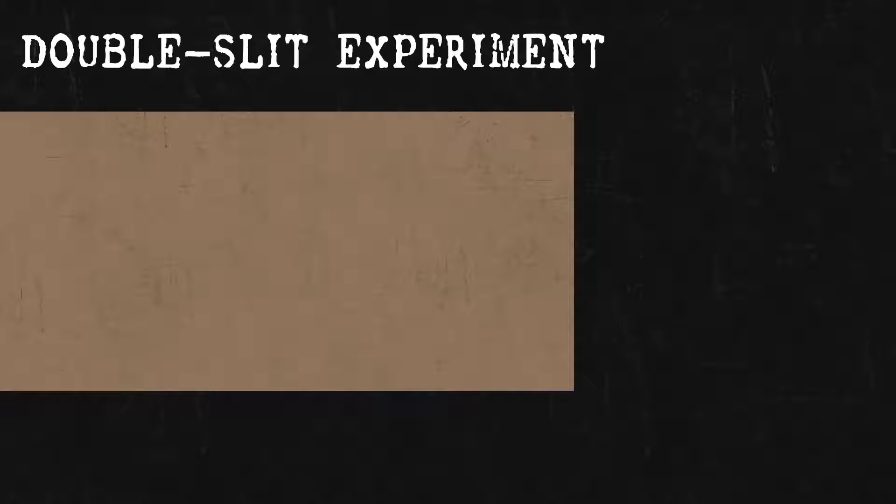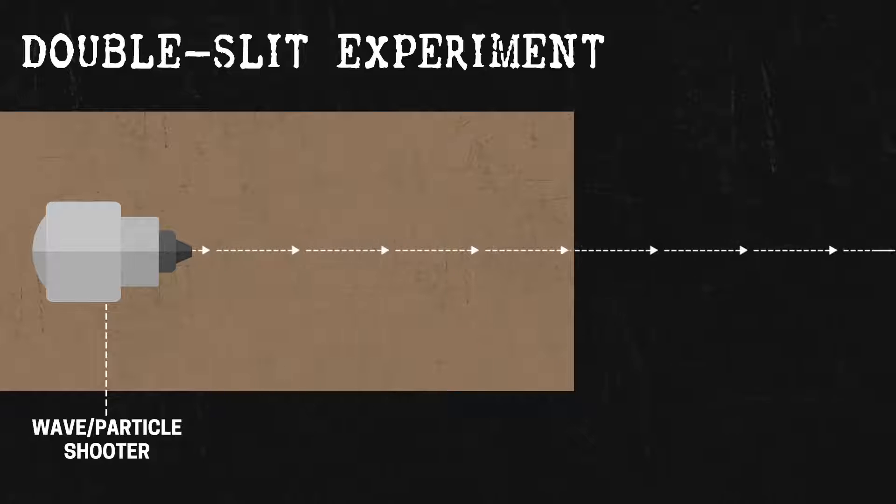The double slit experiment. First, you need some type of scientific equipment to shoot things like particles, waves, or electrons. We'll look at each of these later on.